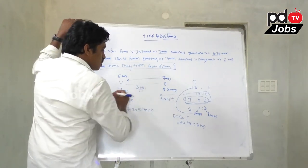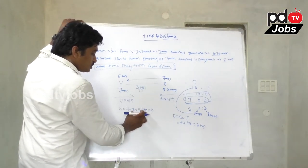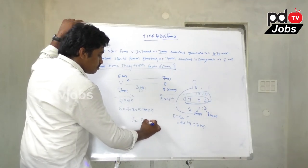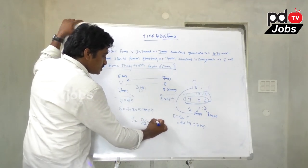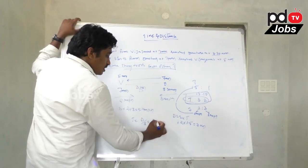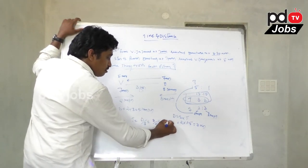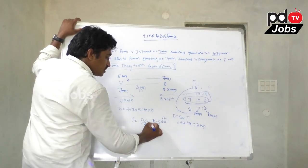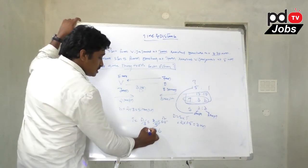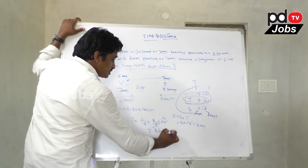Distance is 3 km and speed is 5 kmph. Time equals distance divided by speed: 3 divided by 5 hours. Converting to minutes: 3 divided by 5 multiplied by 60 equals 36 minutes. Therefore they cross each other at exactly 7 hours 36 minutes, that is 7:36 AM.